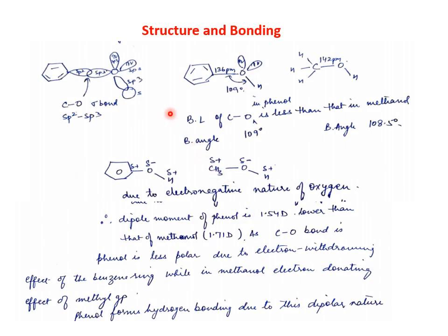Let's talk about the structure and bonding of phenols. An oxygen is attached to the aromatic system. We know benzene has sp2 hybridized carbons, and the oxygen in phenol has sp3 hybridized orbitals. Out of four sp3 hybrid orbitals, one forms a sigma bond with the sp2 carbon (the C–O bond in phenol), one forms a sigma bond with hydrogen, and two sp3 hybrid orbitals contain two lone pairs of electrons.